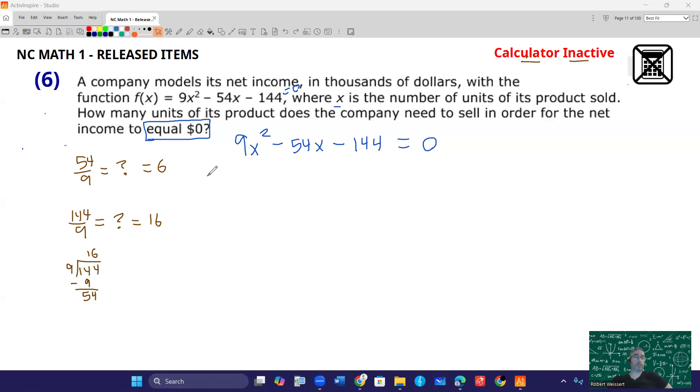Well, I have a GCF, Greatest Common Factor, and that greatest common factor is 9. These are all divisible by 9. So if I divide that out and bring it on the outside, then what's left is the reduced form: x². It's important to keep your sign. So minus 54 divided by 9 is 6, so 6x. 144 divided by 9 is 16. So minus 16 equals 0.